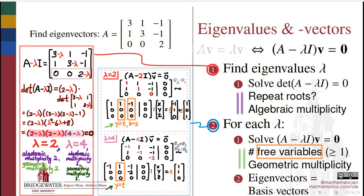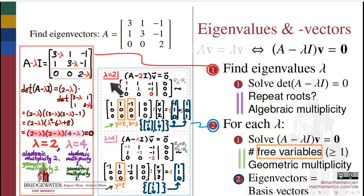Finally, the eigenvectors associated with each eigenvalue are the basis vectors of their respective solution spaces. To package our answer, we take the basis vectors found in our parametric vector solutions and write them as our eigenvectors. So matrix A has eigenvalue λ = 2 with algebraic multiplicity 2, and a basis for that eigenspace consists of two vectors. A also has eigenvalue λ = 4, and a basis for its eigenspace is one vector.